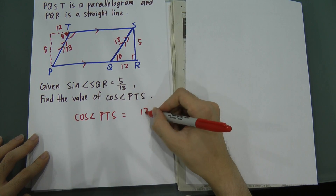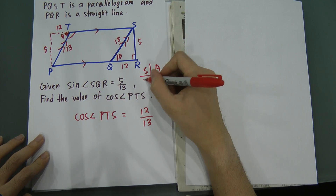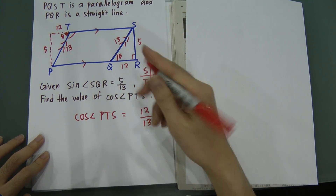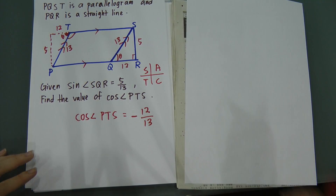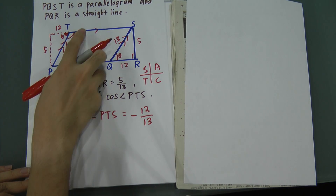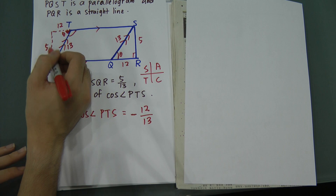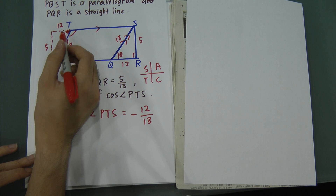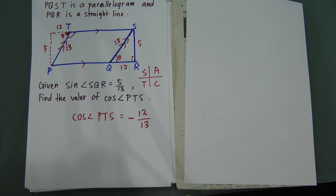The real angle PTS is in the second quadrant. In the second quadrant, only sine is positive — cosine is negative. Therefore, cos PTS = −12/13. Remember, you cannot use the obtuse angle directly to form a right triangle; you must borrow the adjacent angle, find the value, and then apply the correct sign based on the quadrant. I hope these three examples give you a clear idea of how to solve trigonometric questions. Thanks for watching.